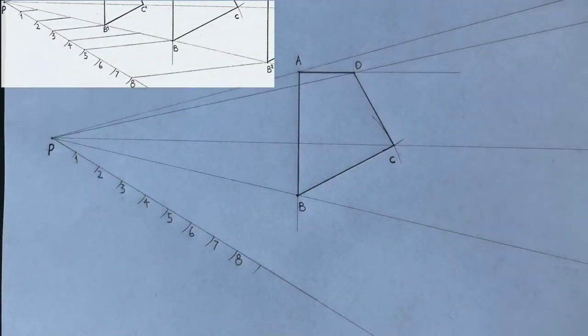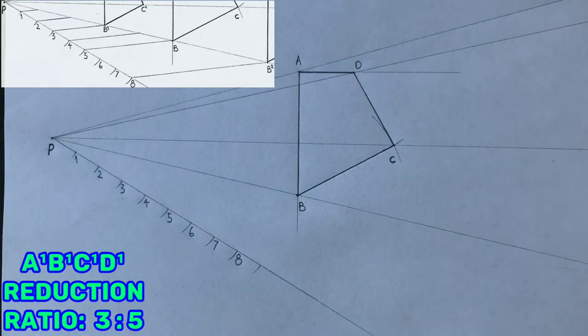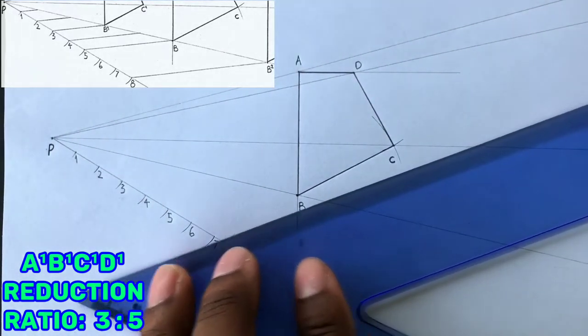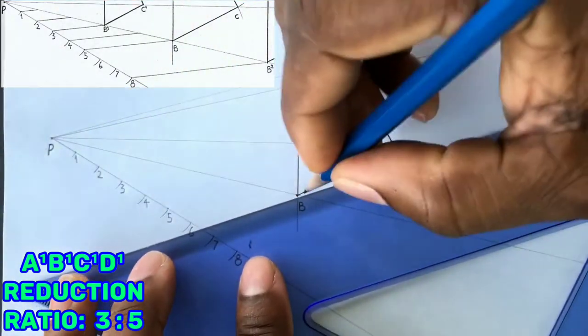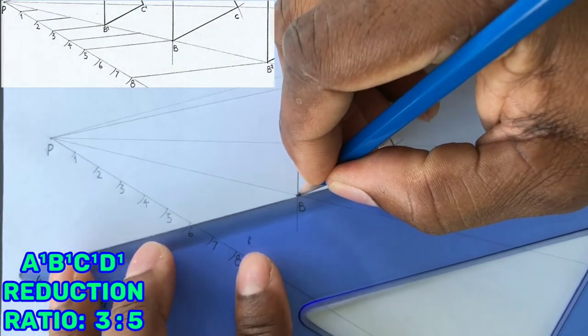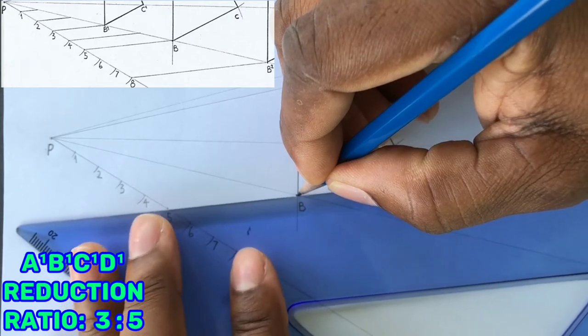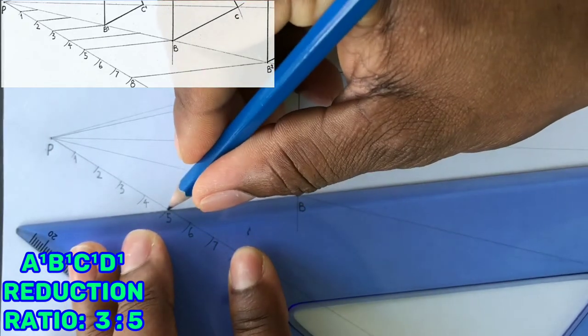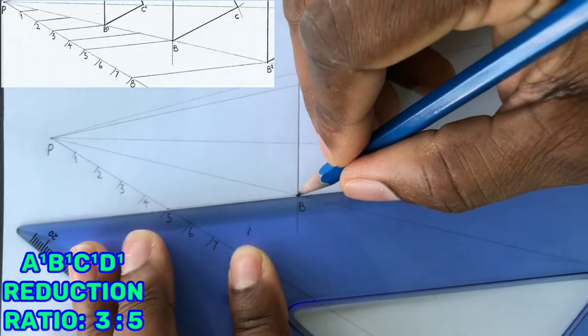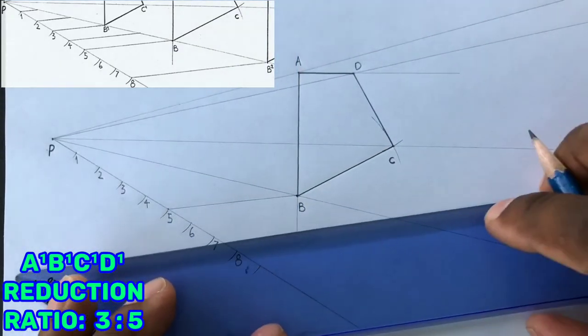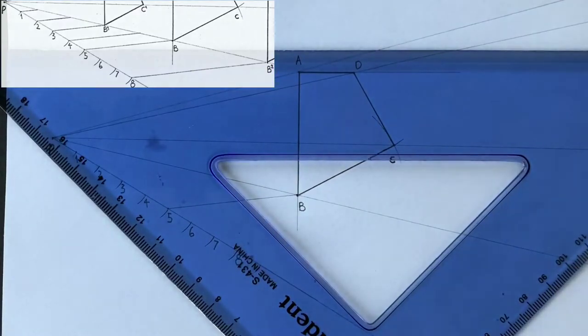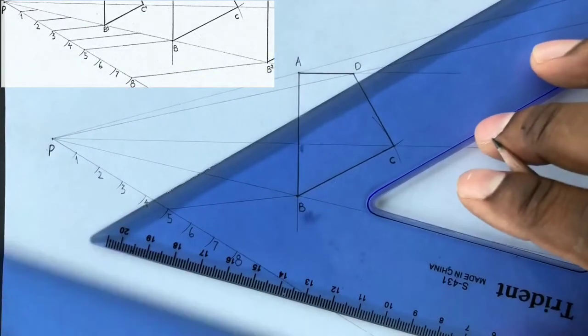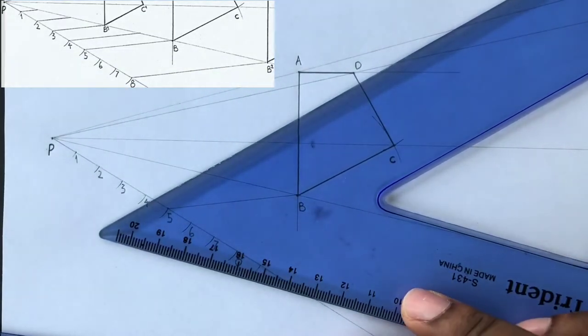You are now given a ratio of three to five to reduce this quadrilateral. So based on this ratio, three to five, you will draw a line from the fifth intersection on your line to point B. The next step is that you will draw parallel lines to line 5B from point 4, 3, 2 and 1 to touch the line PB.